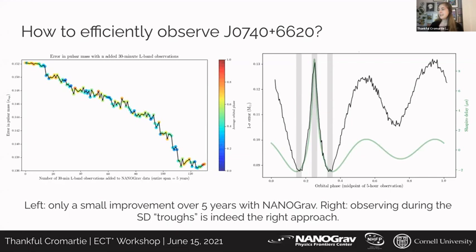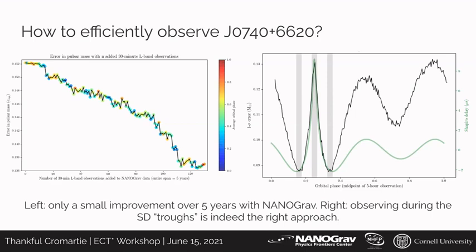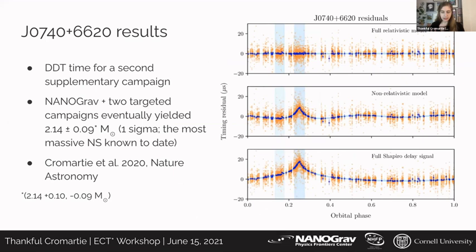We worked to convince the TAC that a bit more observing time would be extraordinarily helpful. The NANOGrav timing program doesn't let us pick the orbital phase at which observations occur — they're completely randomly distributed — so even over five years we wouldn't get a particularly good constraint on mass. We verified that observations over conjunction and in the Shapiro delay troughs are the best way to constrain Shapiro delay. We were awarded five hours over conjunction and five hours in one of the Shapiro delay troughs. Combining those supplementary datasets with the NANOGrav dataset yielded a mass of 2.14 ± 0.09 solar masses (one sigma), making J0740+6620 very likely the most massive neutron star.